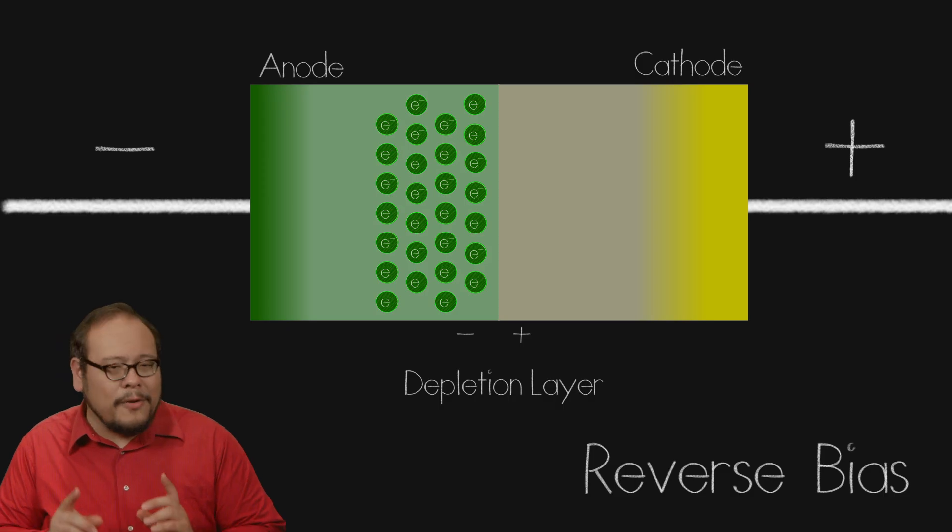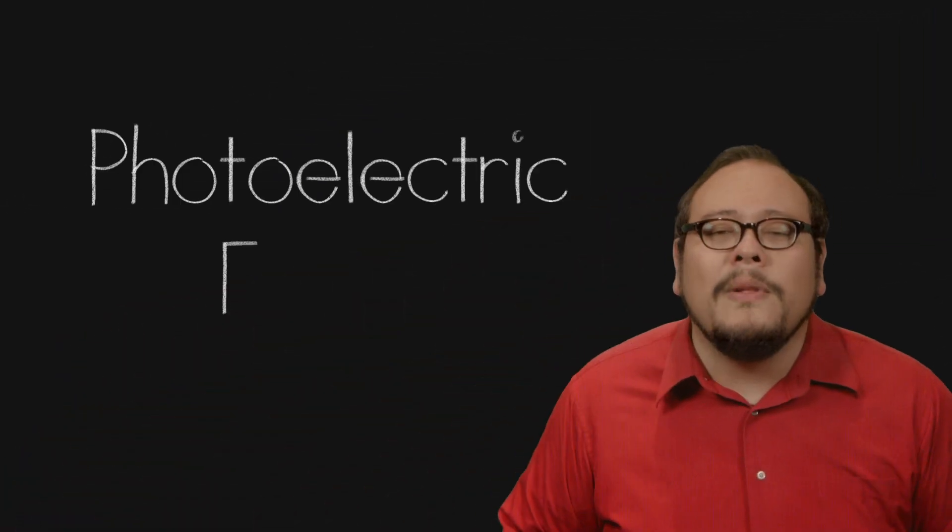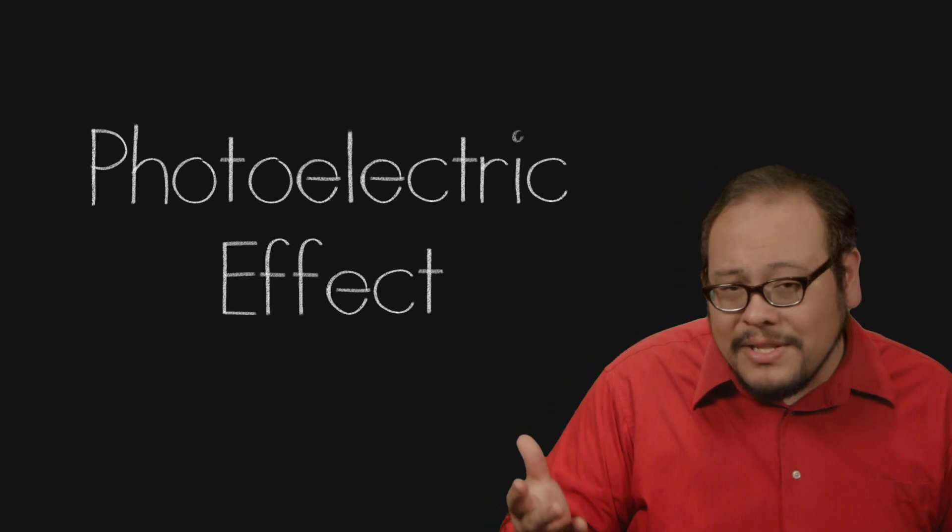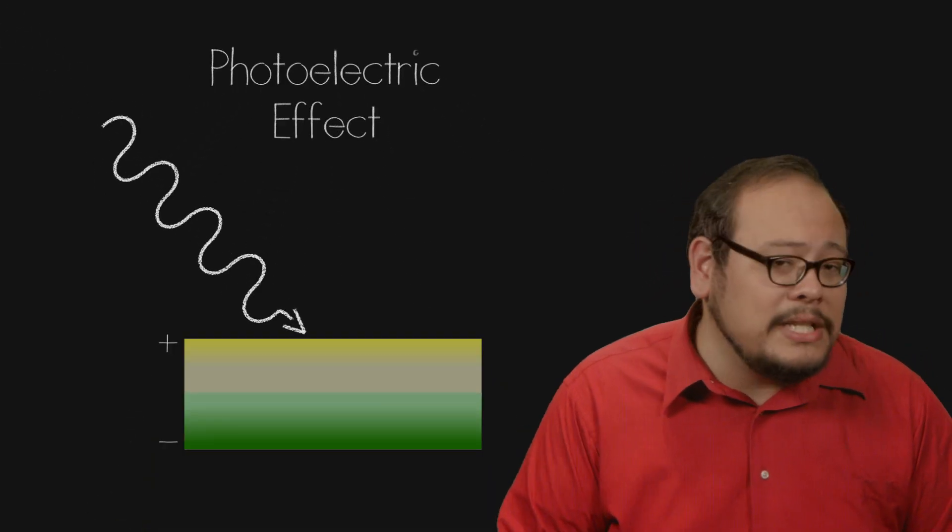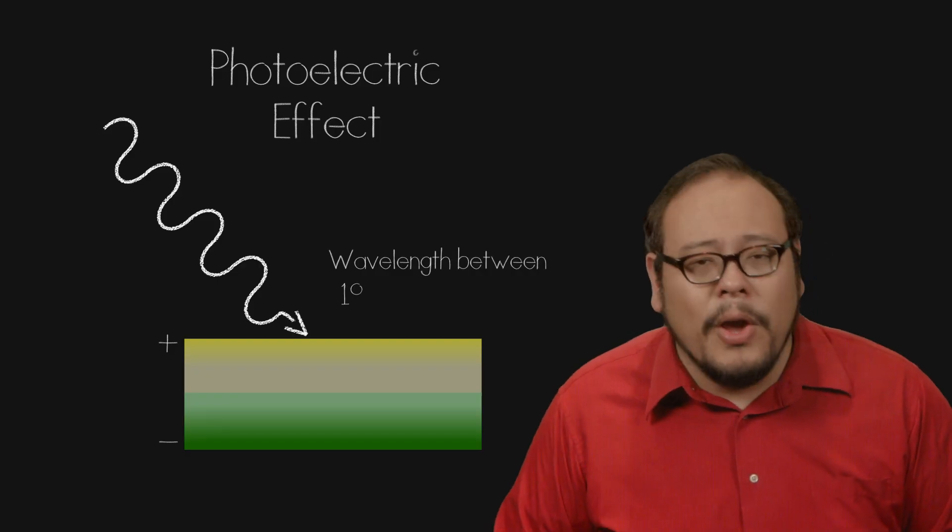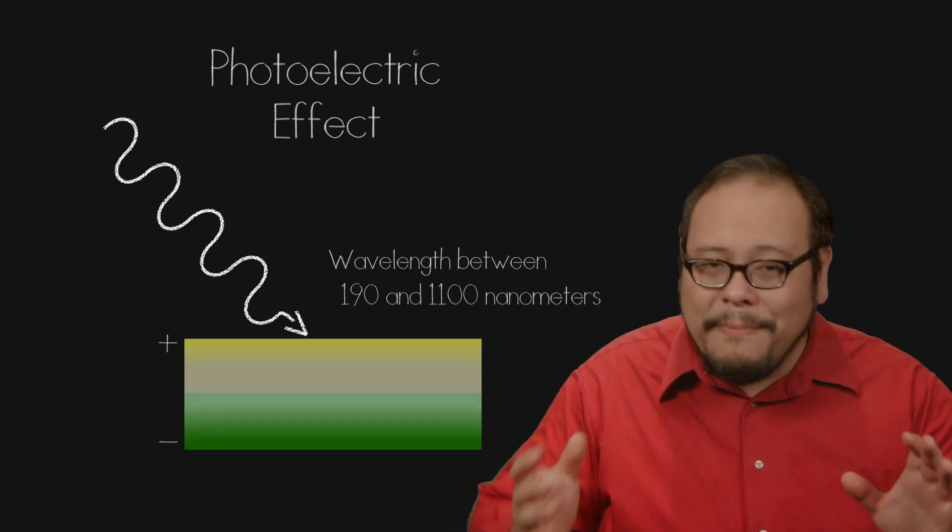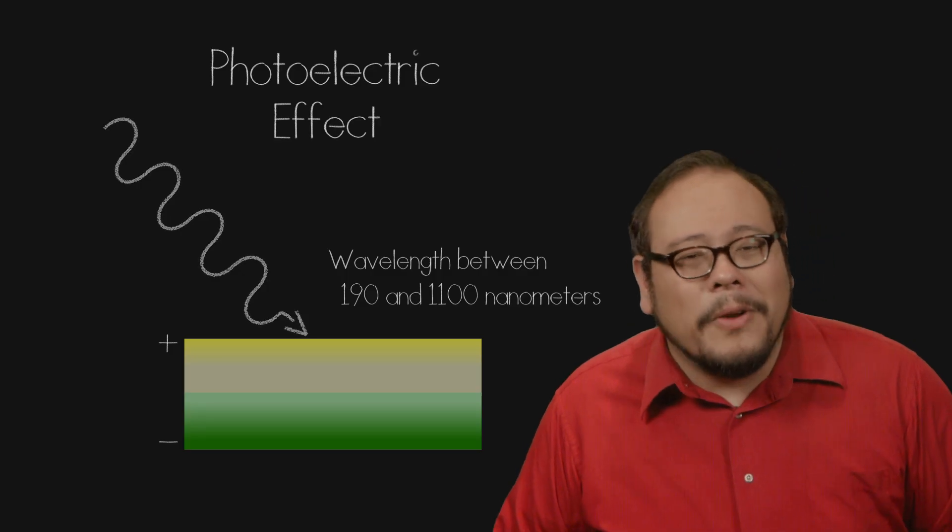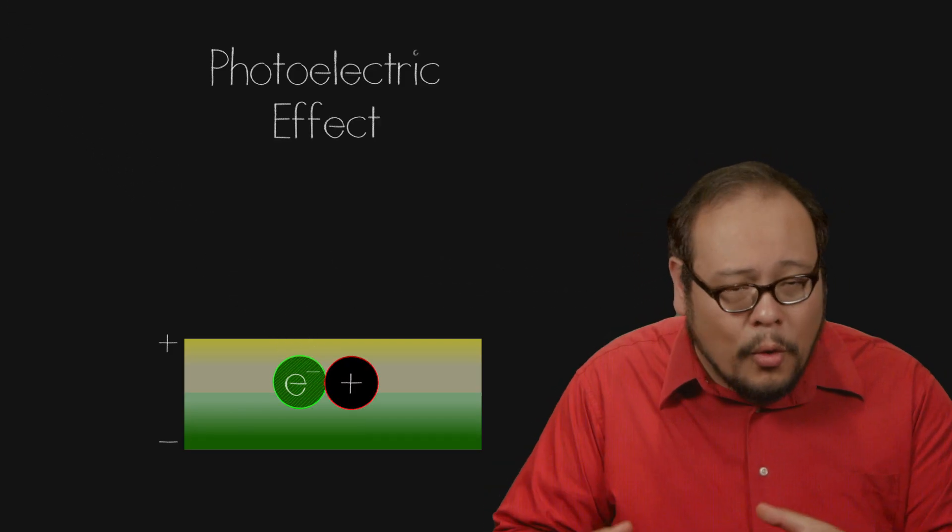When a diode is in reverse bias, we can exploit a phenomenon called the photoelectric effect. Just as with silver halide crystals, silicon reacts when struck with photons of a specific energy, wavelengths between 190 and 1100 nanometers, which happens to include visible light. When a photon is absorbed by a silicon crystal, it creates an electron hole pair.